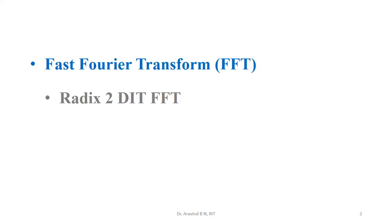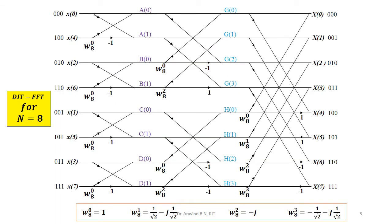Welcome. In this lecture we are going to continue with the radix-2 DIT FFT calculation for N equal to 8. First let us go through the butterfly diagram for N equal to 8. There are only two cases we are going to study: one for N equal to 4, which we covered in the previous lecture, and the other for N equal to 8. This butterfly diagram will have a total of three stages of calculation. At the end of the third stage we get our result in the frequency domain, that is X[0] to X[7].